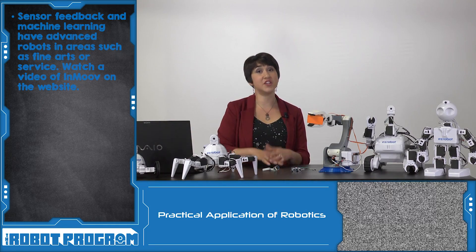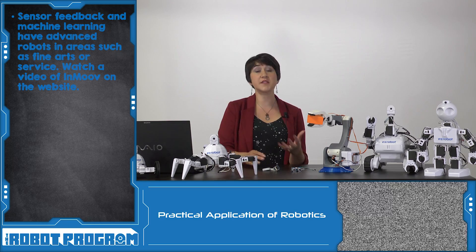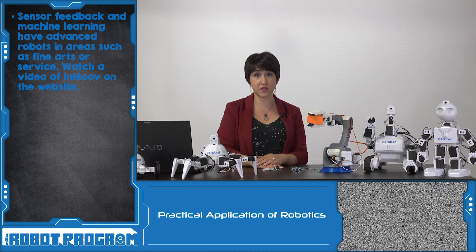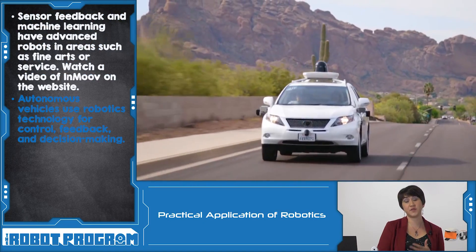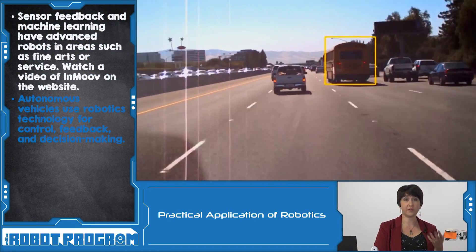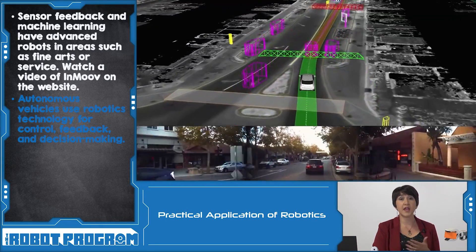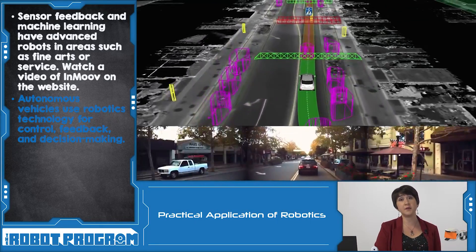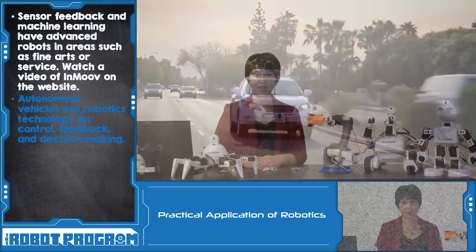Another technology that uses concepts from the field of robotics is autonomous vehicles. If a car is going to drive through a city on its own, it'll need feedback from sensors, it'll need to be monitoring conditions, and it'll also need to be capable of making decisions for itself.